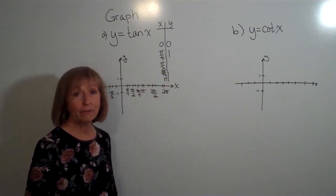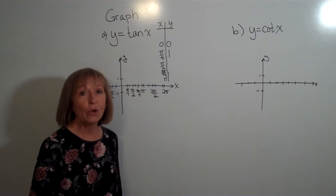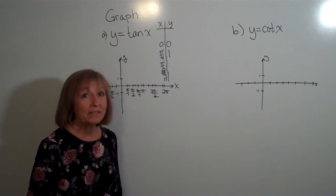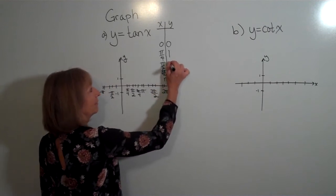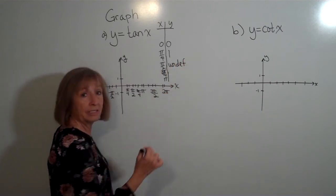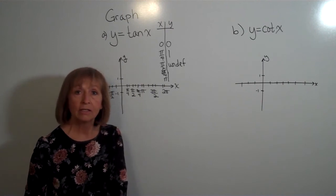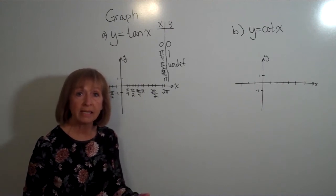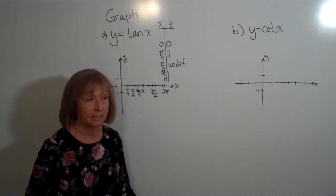At pi over 2, the sine of pi over 2 is 1 and the cosine of pi over 2 is 0. So 1 divided by 0 is undefined. This is the first time, compared to the graphs of sine x and cosine x, where we encounter an undefined value.